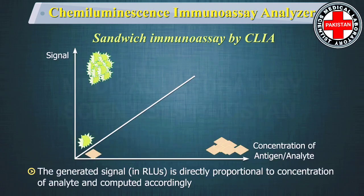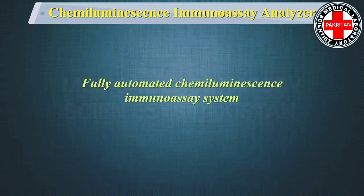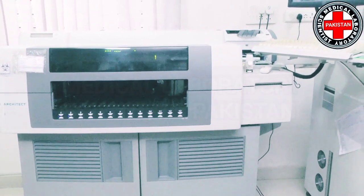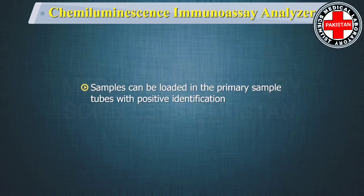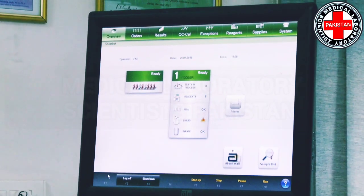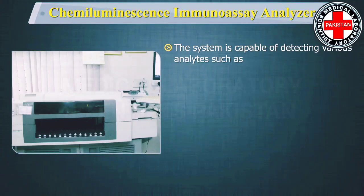The generated signal in RLUs is directly proportional to the concentration of analyte and is computed accordingly. Fully automated equipment usually has a high throughput of about 100 tests per hour and has a walk-away feature. Samples can be loaded in the primary sample tubes with positive identification. These analyzers are computer controlled and can easily be connected to the lab information system for increased data management capabilities.